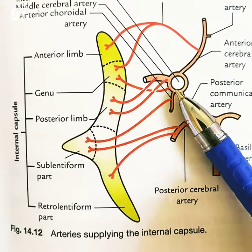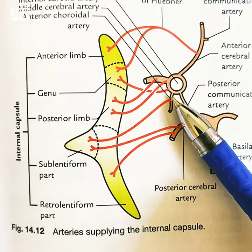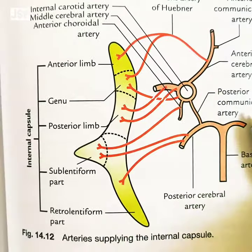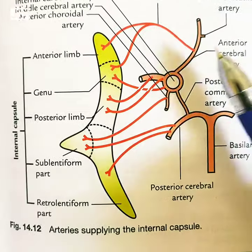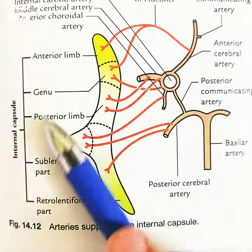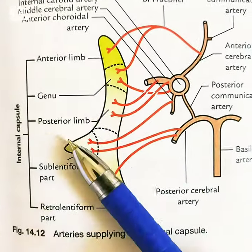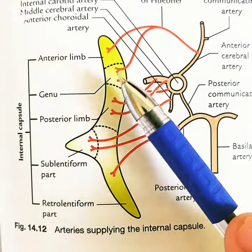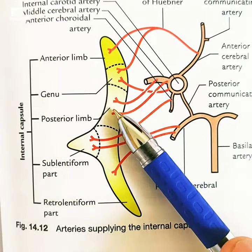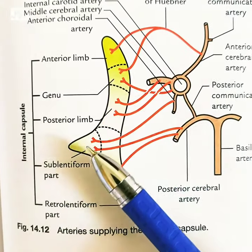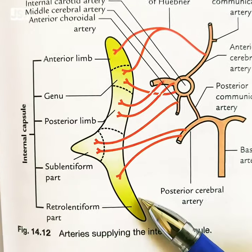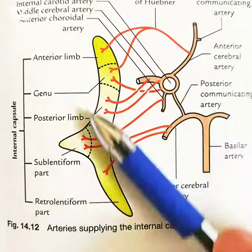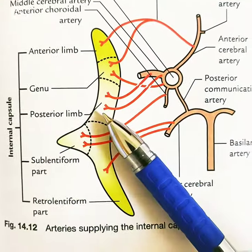The middle cerebral artery gives the anterior choroidal artery, which is part of the circle of Willis. Now coming to the internal capsule — the internal capsule is divided into anterior limb, genu, posterior limb, sublentiform, and retrolentiform parts.